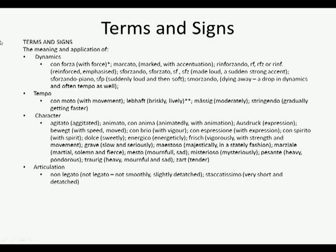Okay. Finally, terms and signs. Okay. We've spoken about things like dynamics, tempo, character, and articulation. Remembering dynamics is louds and softs. Tempos are your speeds. Character is really the character or the emotion that you put into it. And articulation would be the attack. So if something is played short or if it's being given its full length. Okay.